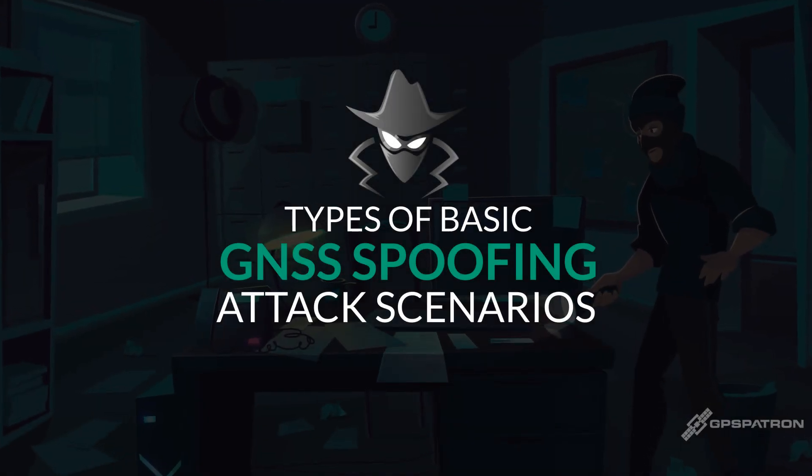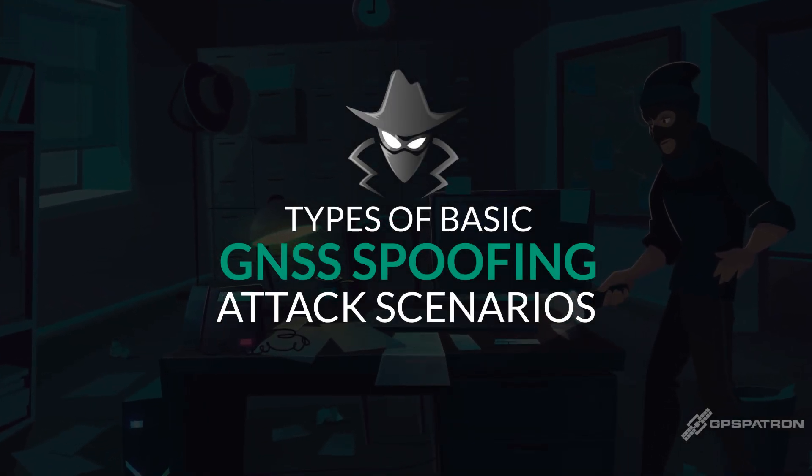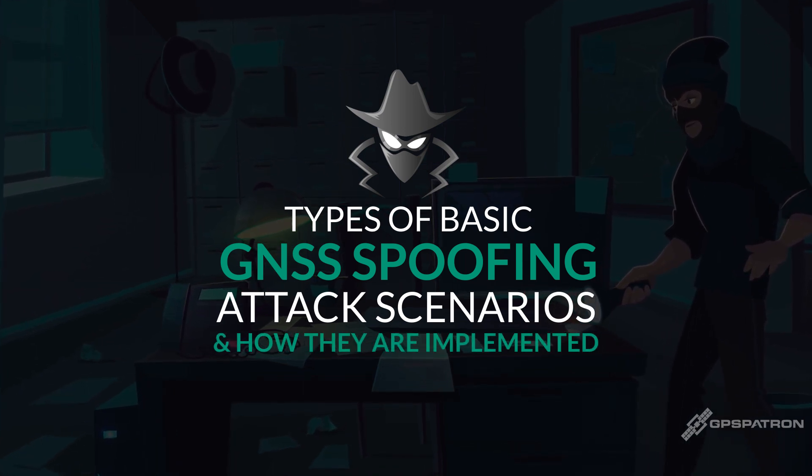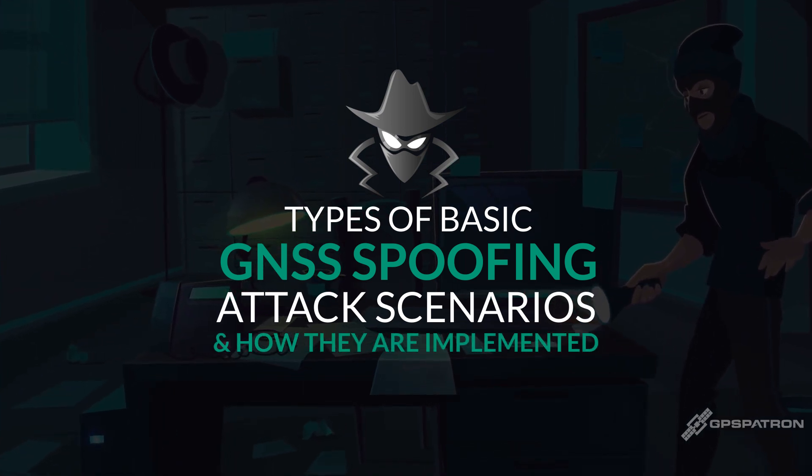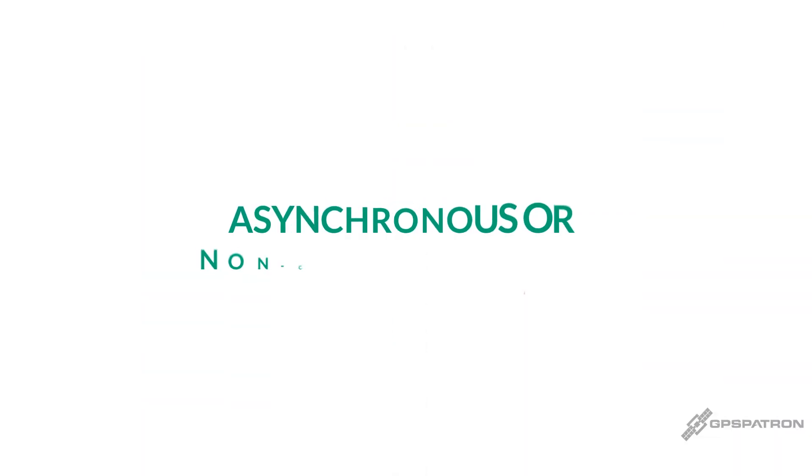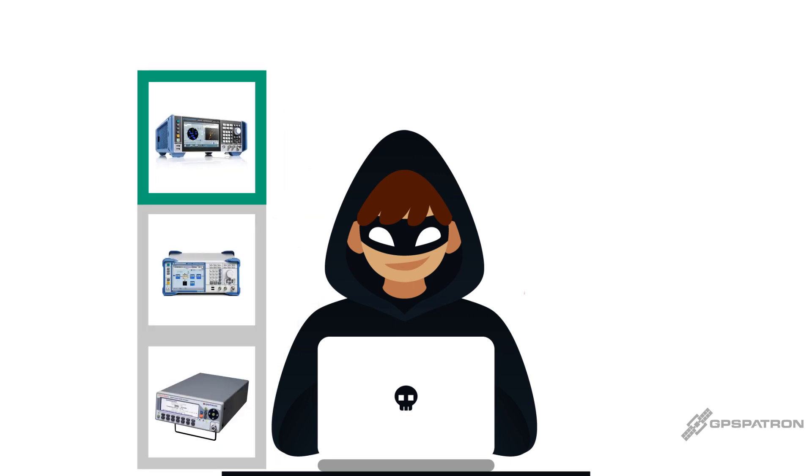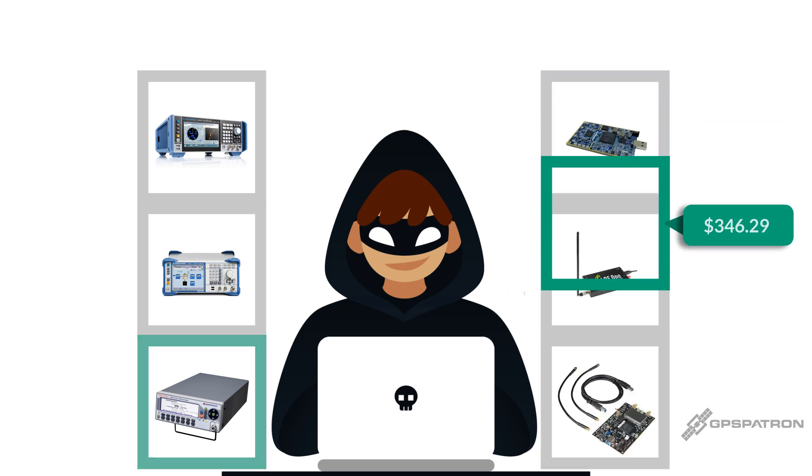In this video we will examine the types of basic GNSS spoofing attack scenarios and how they are implemented. Let's begin with the simplest and least expensive: the asynchronous and non-coherent attack. Asynchronous attacks can be accomplished with any commercially available GNSS signal imitator or with software-defined radios and open source software from GitHub.